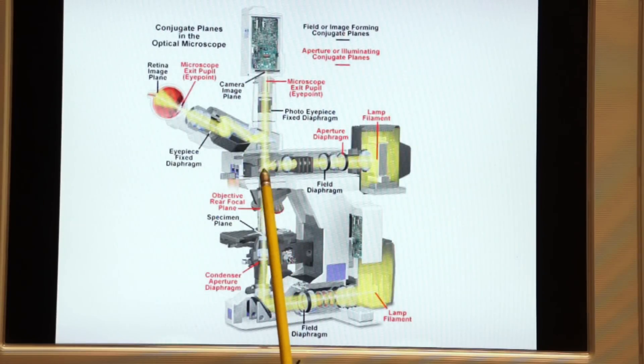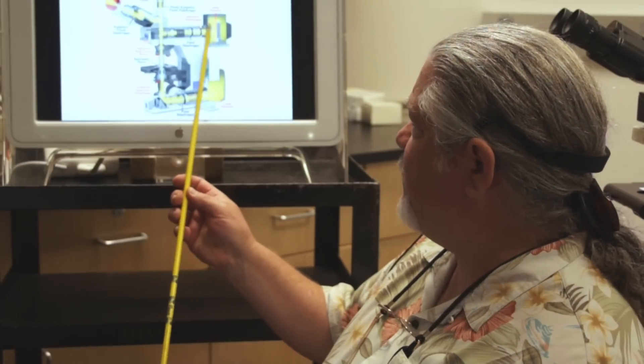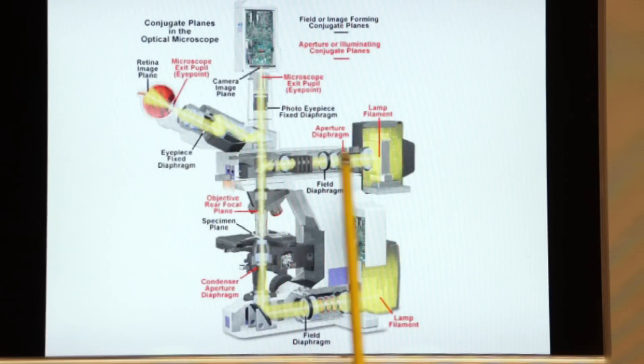Now this microscope also does reflected light. Remember in fluorescence we're using reflected light to illuminate our specimen. So this is the fluorescent vertical illuminator.